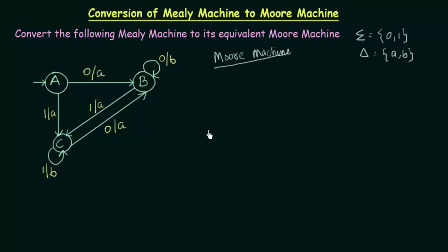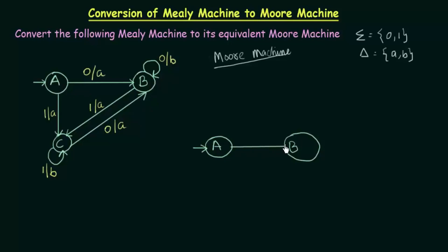First of all we will start with the starting state, which is state A. On input 0, state A goes to state B and gives output A. Now, as this is a Moore machine, we cannot associate the output to the transition — we have to associate the output to the states. Since it is giving output A and going to state B, I will associate the output A to state B. The output is now associated to the state, which is the property of a Moore machine.